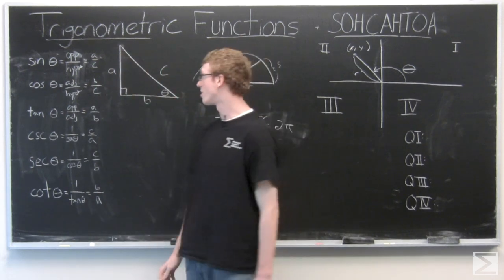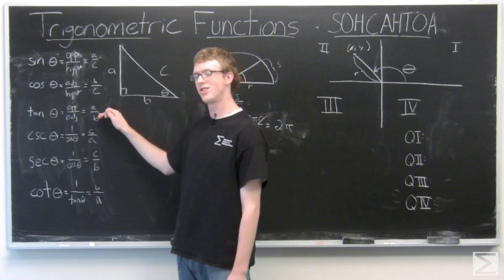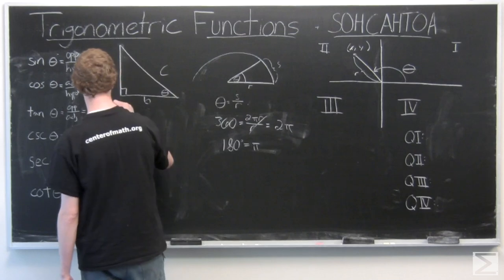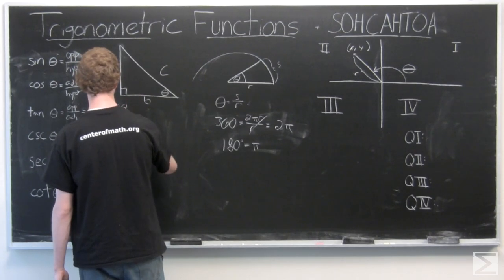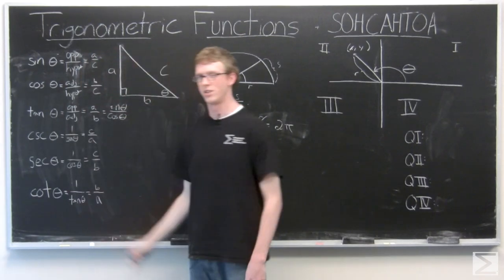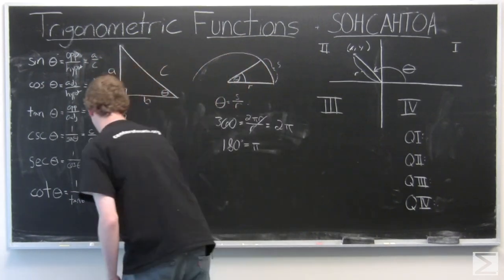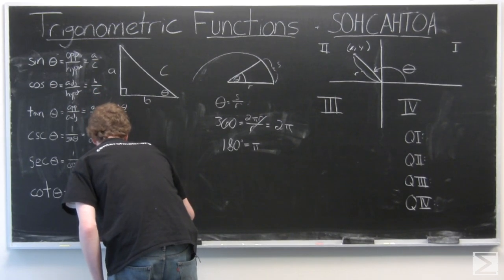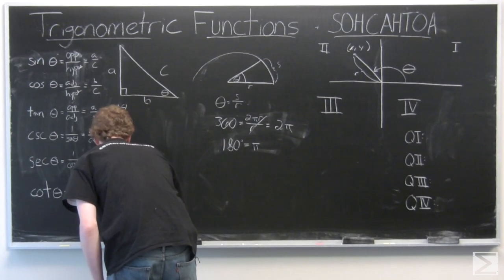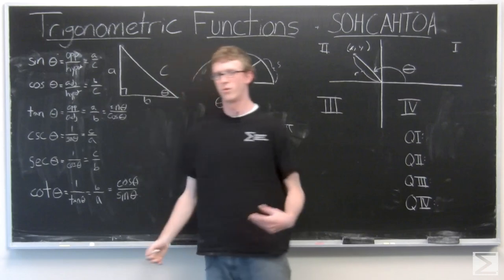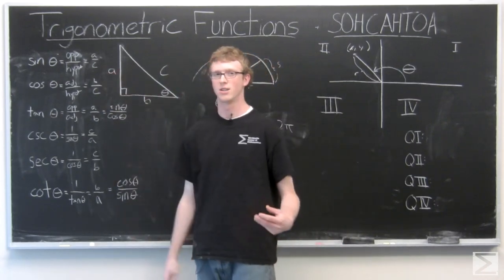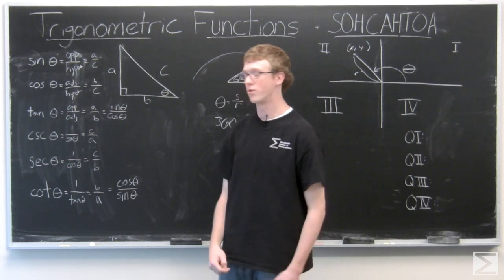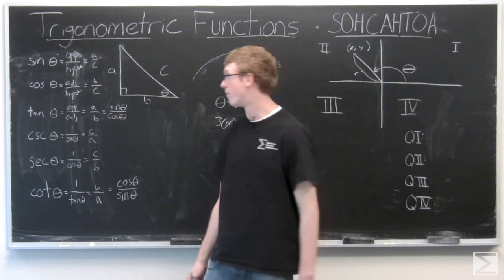So another important thing you might notice about these trig functions, tangent of theta is really just sine theta over cosine theta. And cotangent is really cosine over sine. So really the most important trig functions we're looking at are sine and cosine. You can find all the other trig functions from that. Those are essentially the two most important and the two that we're going to be working with most.